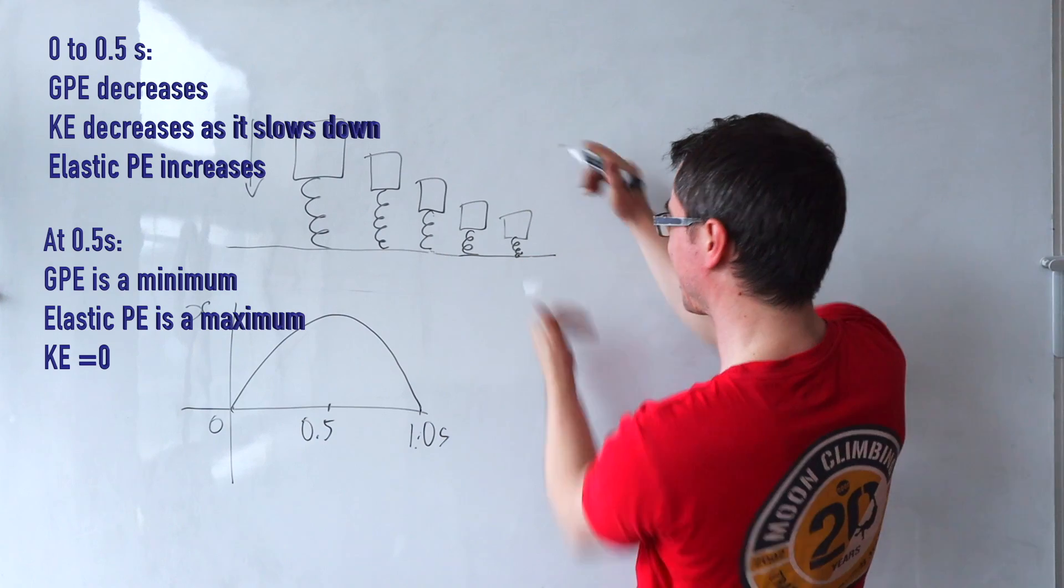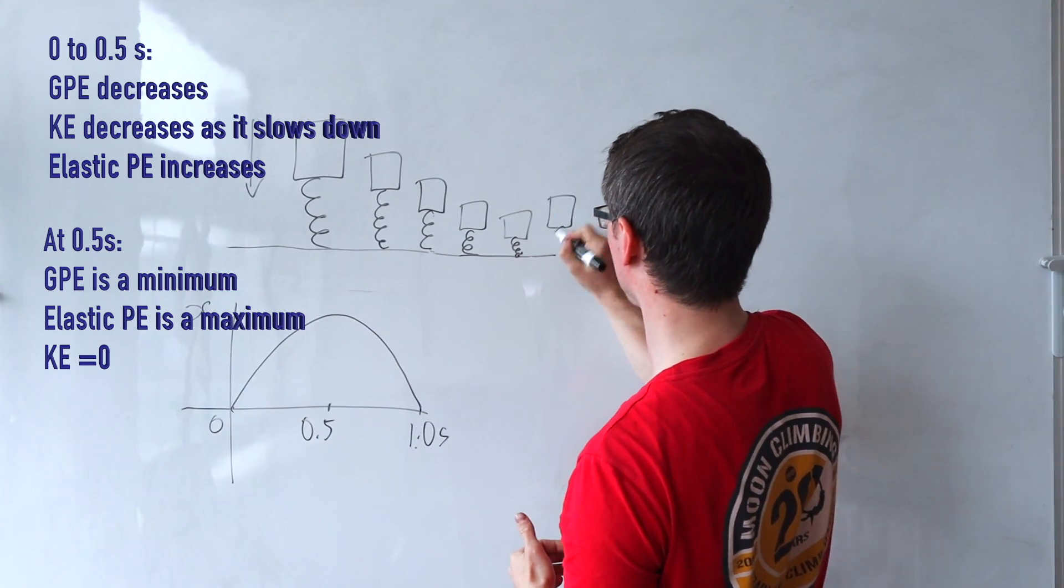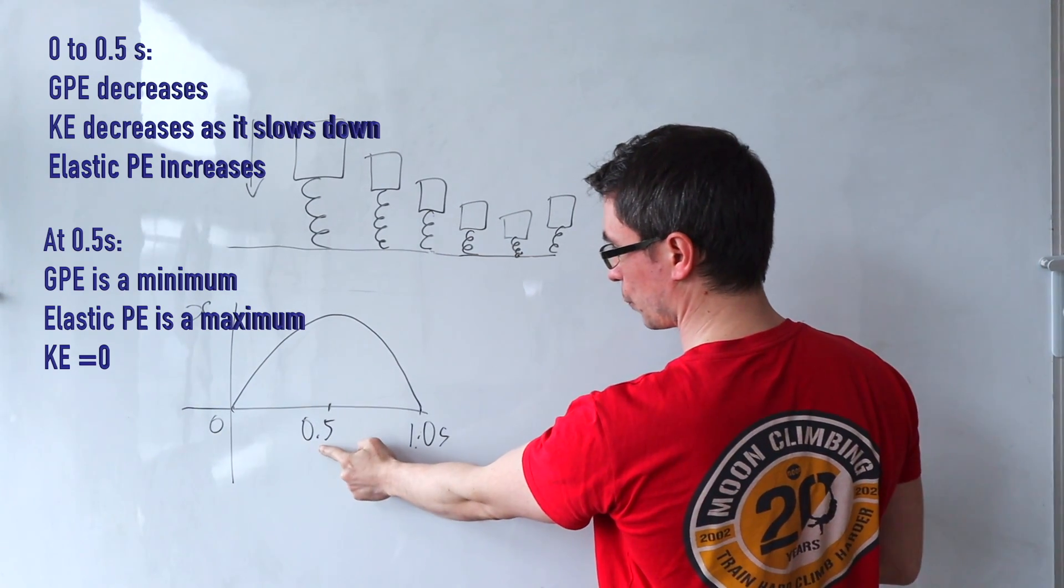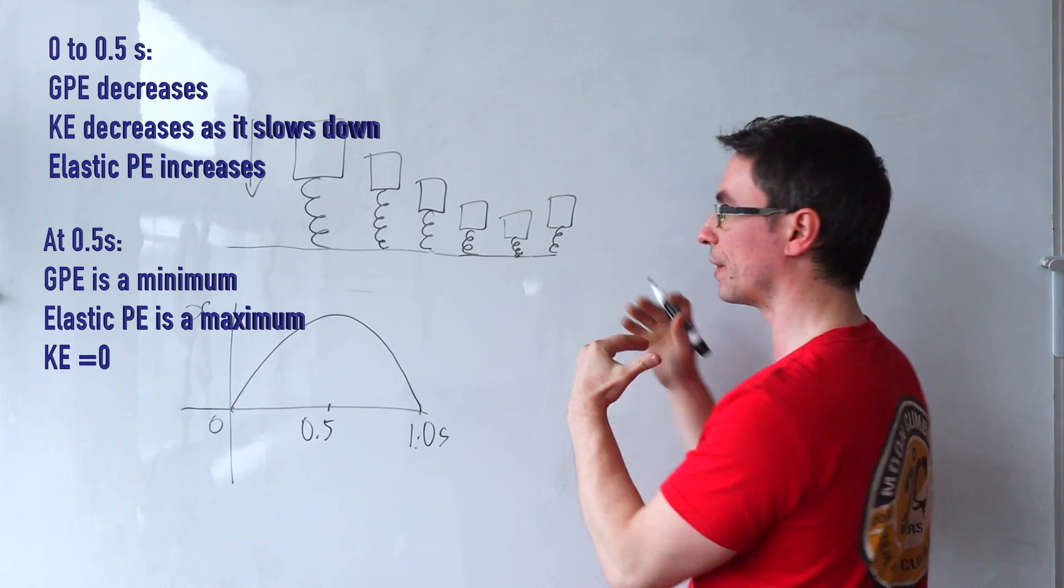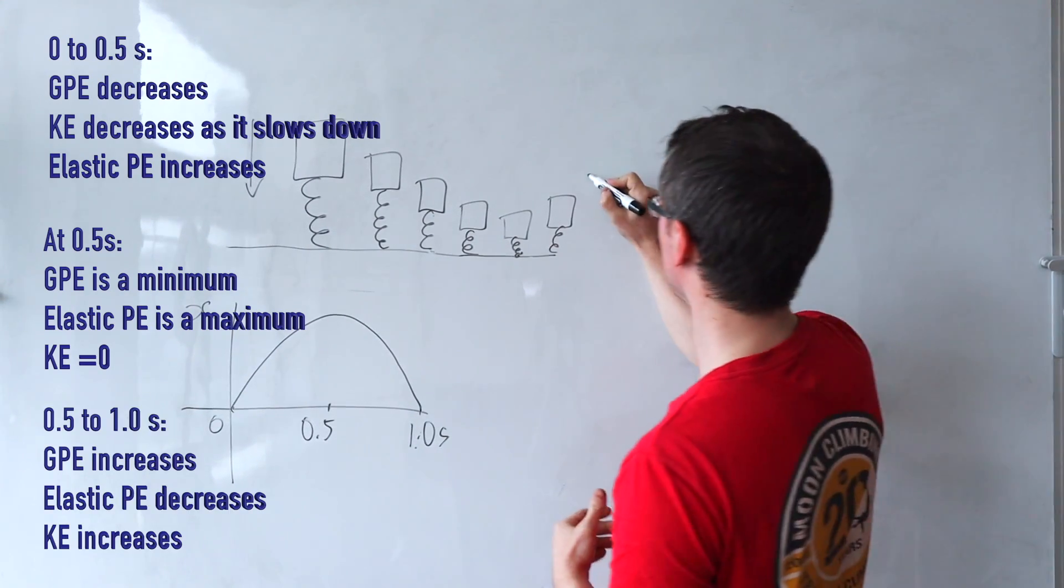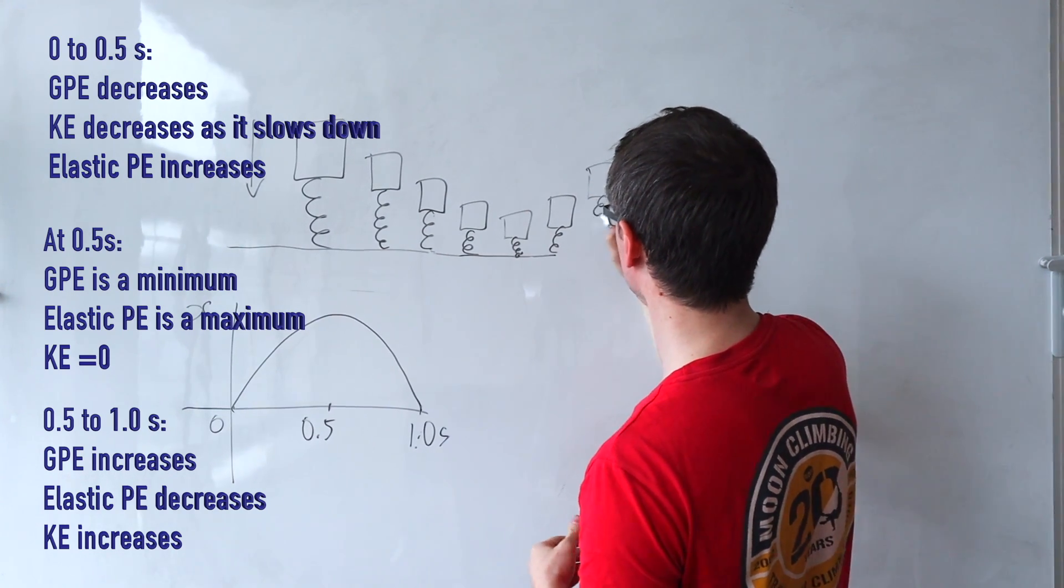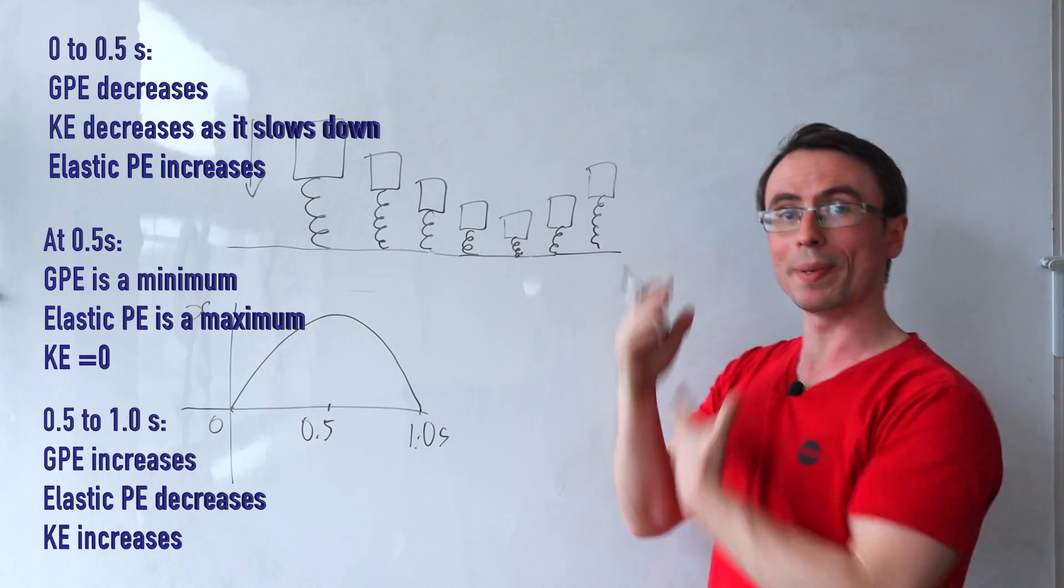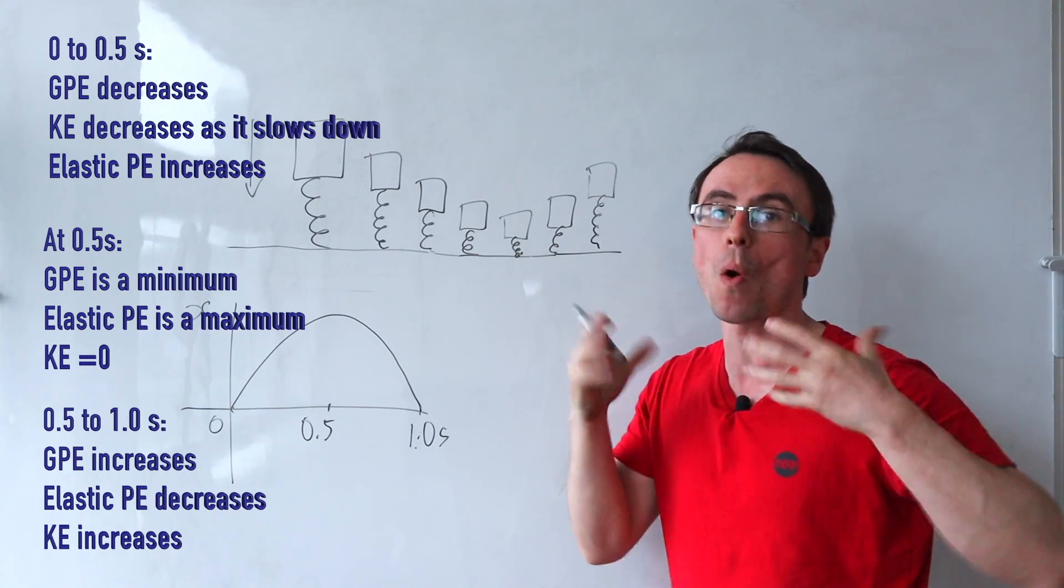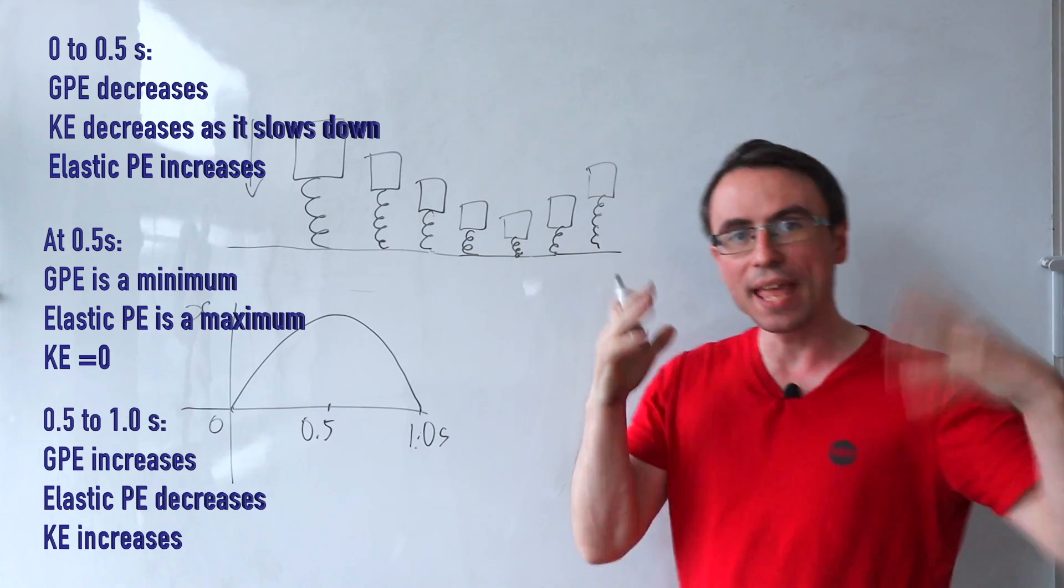Now the spring starts to extend, and between t equals 0.5 and 1.0 seconds, the elastic potential energy will be decreasing. On the other hand, the gravitational potential energy will be increasing and the kinetic energy will also be increasing.